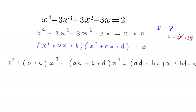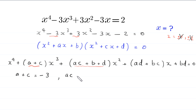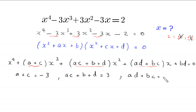Comparing coefficients with our equation x⁴ - 3x³ + 3x² - 3x - 2 = 0, we get four equations: a + c = -3; ac + b + d = 3; ad + bc = -3; and bd = -2.